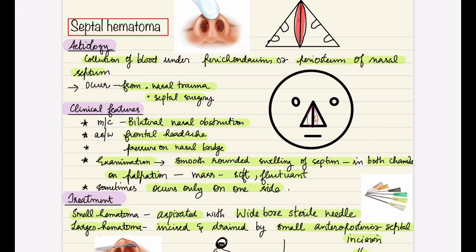Septal hematoma is a collection of blood under the perichondrium or periosteum of the nasal septum. It occurs due to nasal trauma or post-septal surgery. Clinical features include most commonly bilateral nasal obstruction.